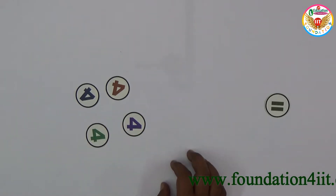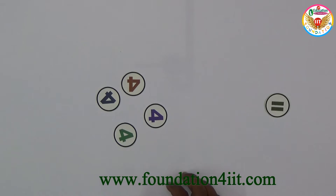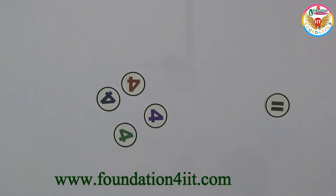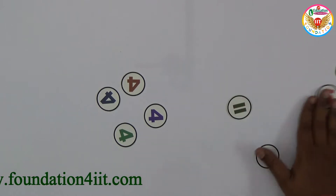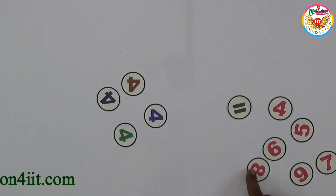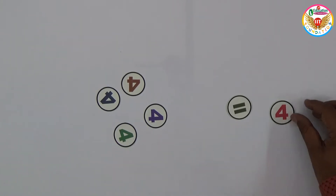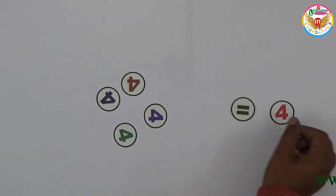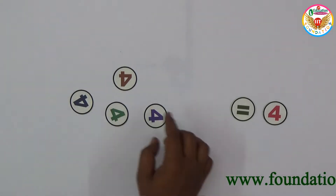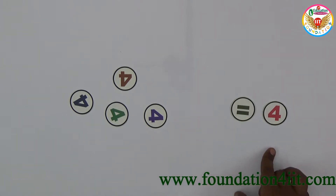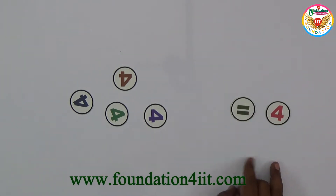With four fours we have seen how to make 1, 2, and 3. Now I will show how to make 4, 5, 6, 7, 8, 9, and 10. Let me show you how to make equal to 4 using four fours with basic mathematical operations.